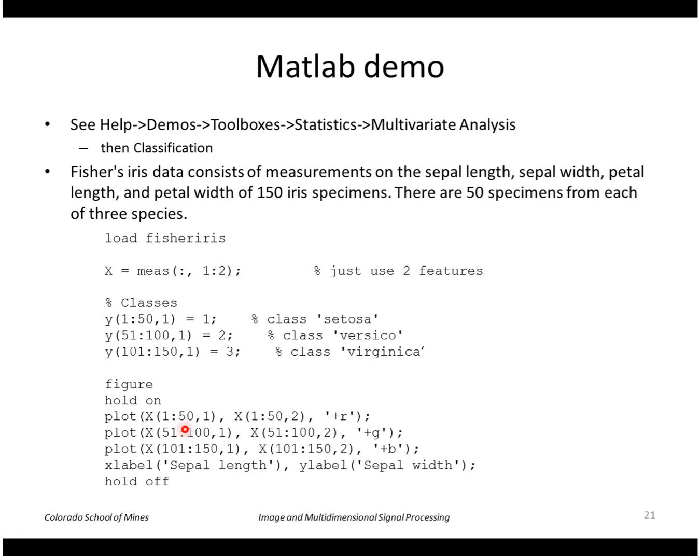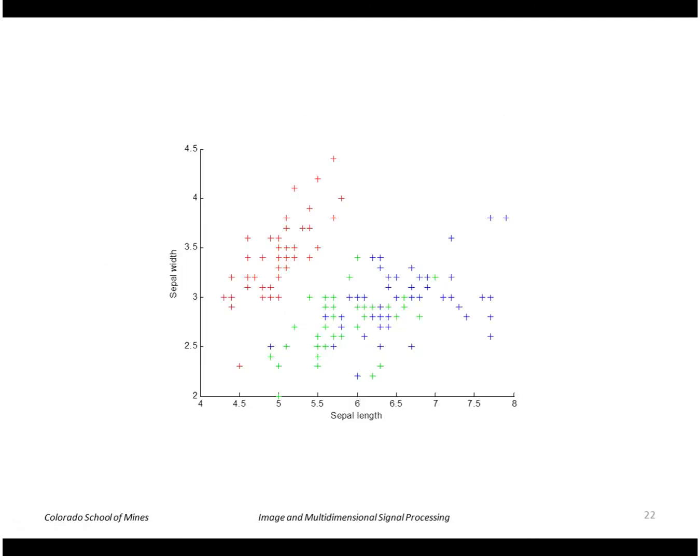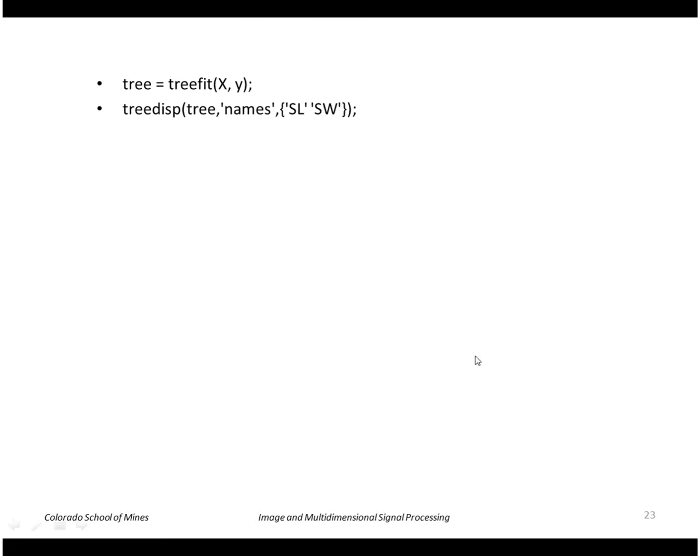So to plot that in a two dimensional set of vectors, the first dimension is actually called sepal length and the next one is sepal width. So here are the set of 150 vectors, three classes again, and I colored them red, green, blue. So class 1 is red, kind of clusters naturally here. Class 2 and 3 for green and blue are kind of mixed together. Green seems to be more down here and blue seems to be more up here.